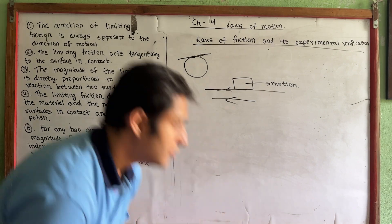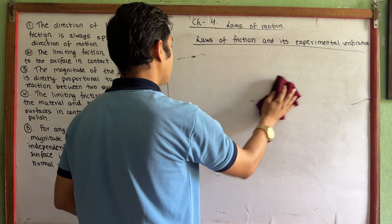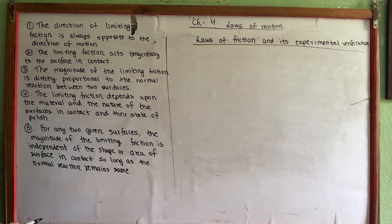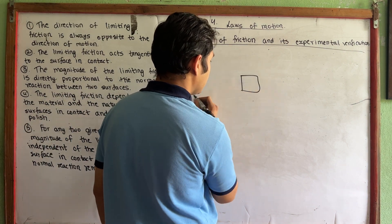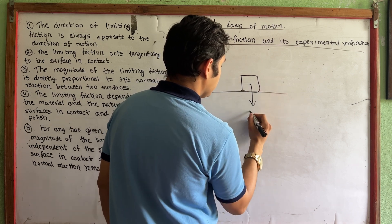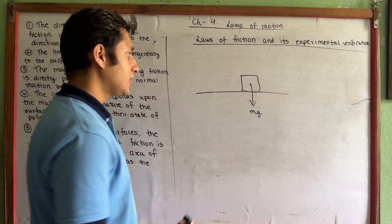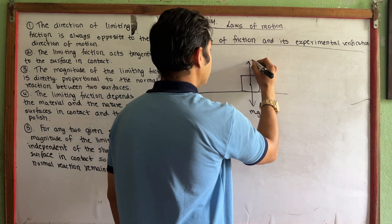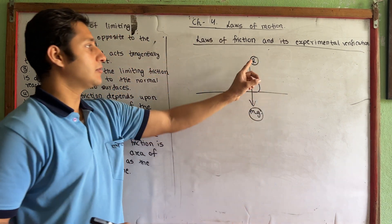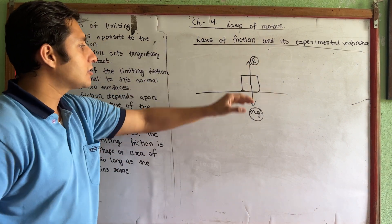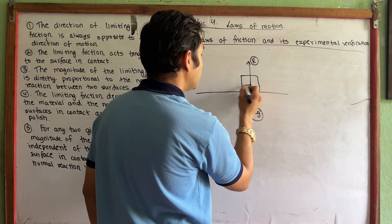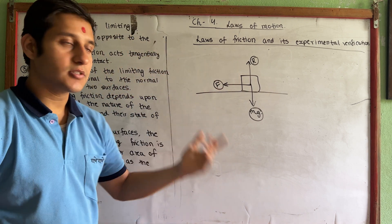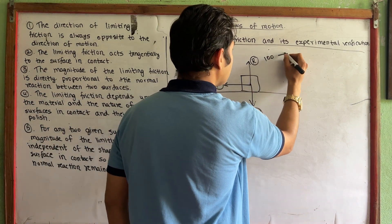Now let's move on to the third law: the magnitude of the limiting friction is directly proportional to the normal reaction between the two surfaces. The weight of the body is mg, and the normal reaction to mg is R.